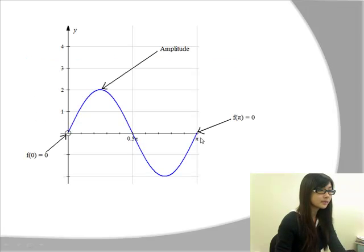So the graph would look something like this, with an amplitude of 2 and a period of π, starting with 0 and ending with 0.